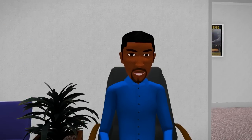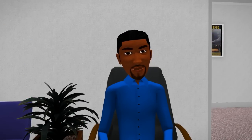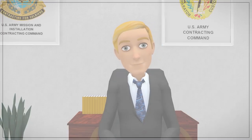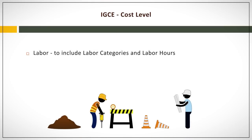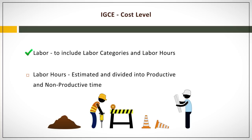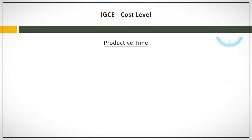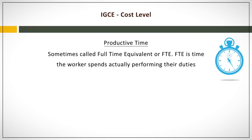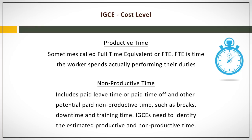For my current purchase, it looks like I'm working with a cost level IGCE. Can you help me understand these cost elements in further detail? Sure, let's start with labor. The requiring activity should identify all labor categories required for each task by contract line item number, for each year of anticipated effort, to include all options over the life of the contract. Labor hours are estimated but are divided into productive and non-productive time. Productive time — sometimes called full-time equivalent or FTE — is time the worker spends actually performing their duties. Non-productive time includes paid leave, paid time off, and other potential paid non-productive time such as breaks, downtime, and training time.